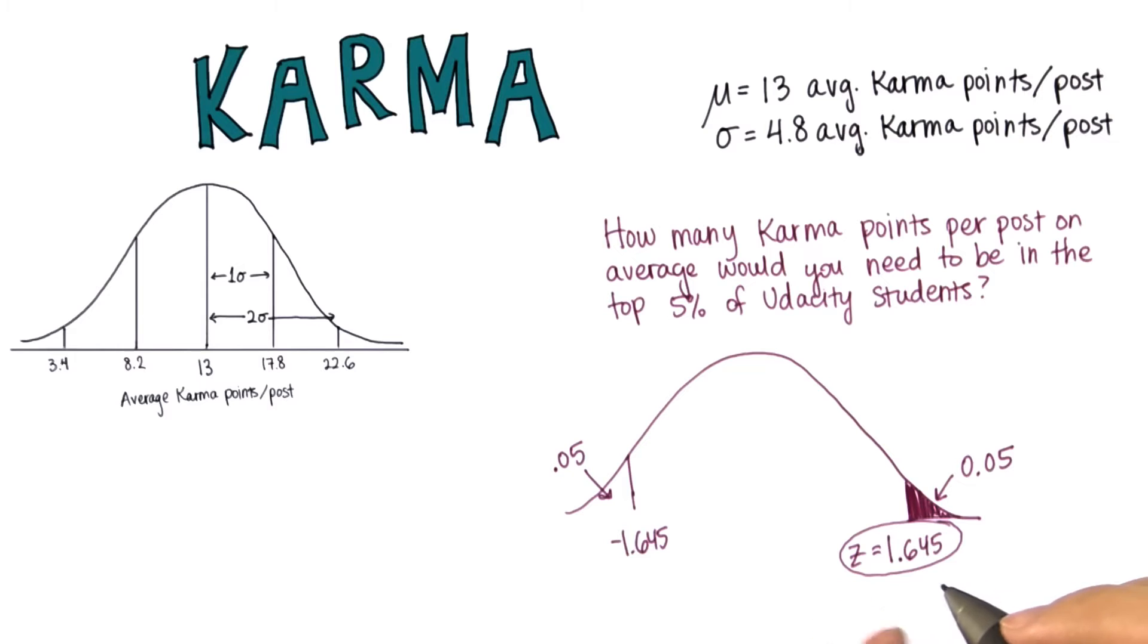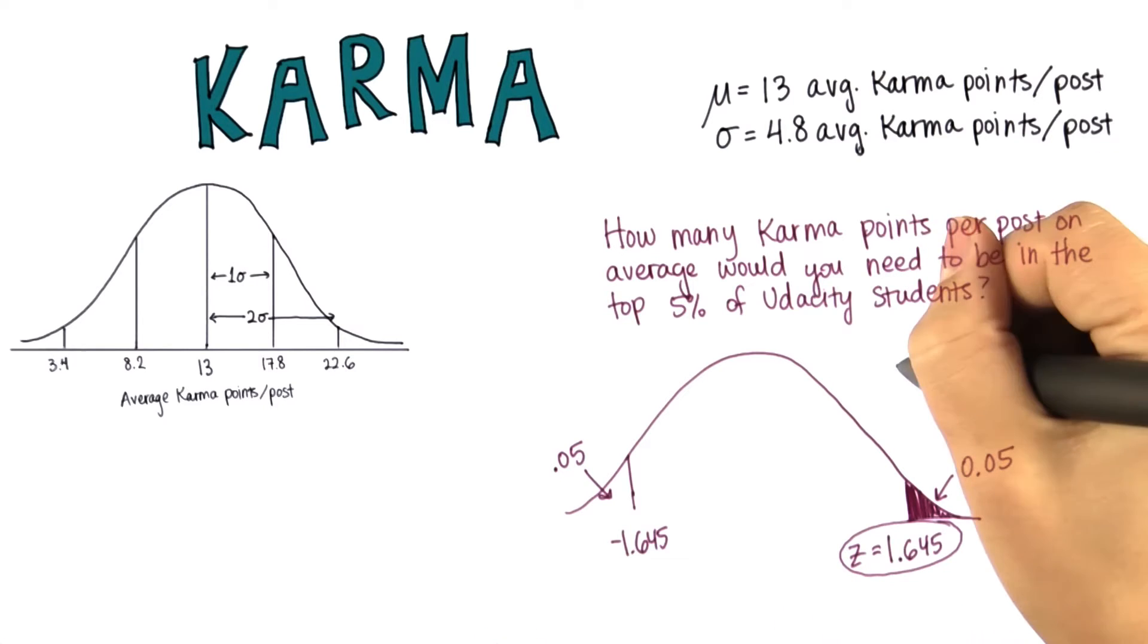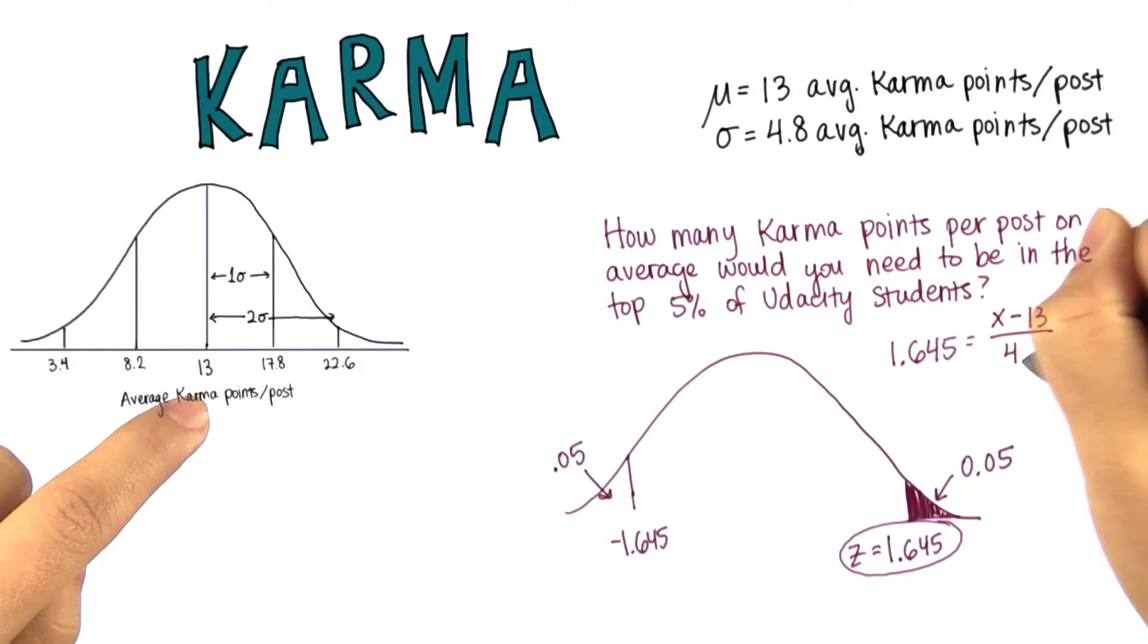So this is the z-score that we want, and now let's convert this to karma points. 1.645 equals the number of karma points minus the mean, divided by the standard deviation.